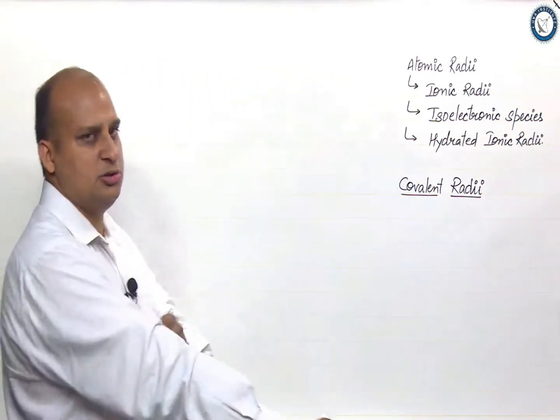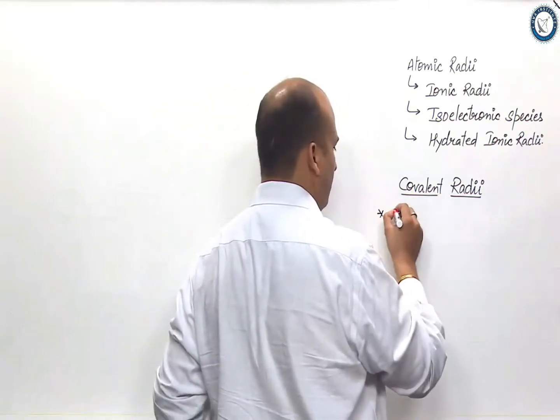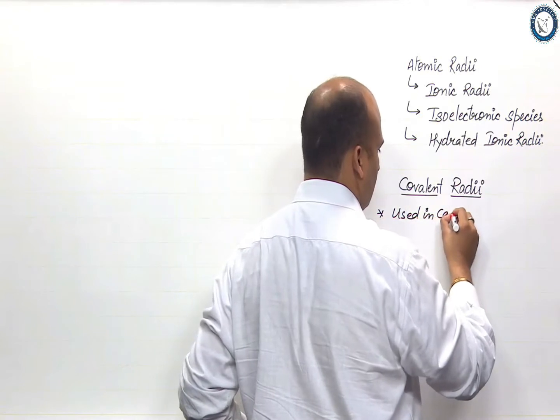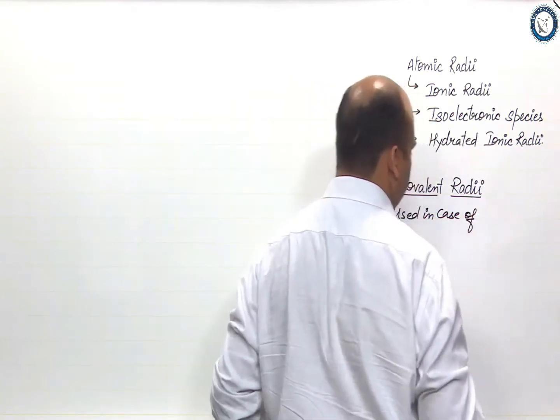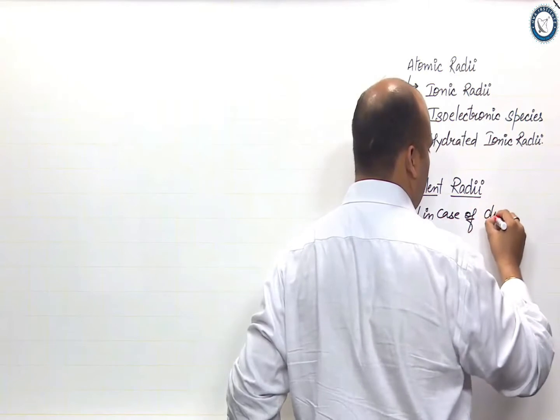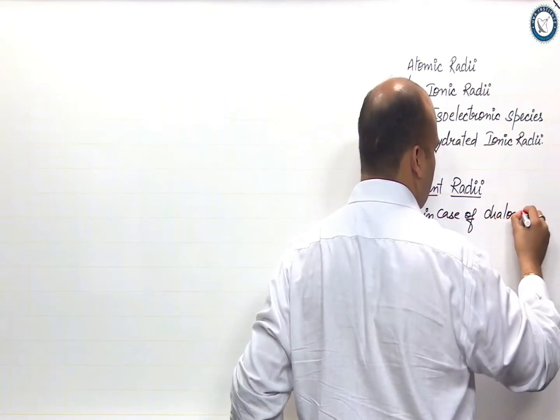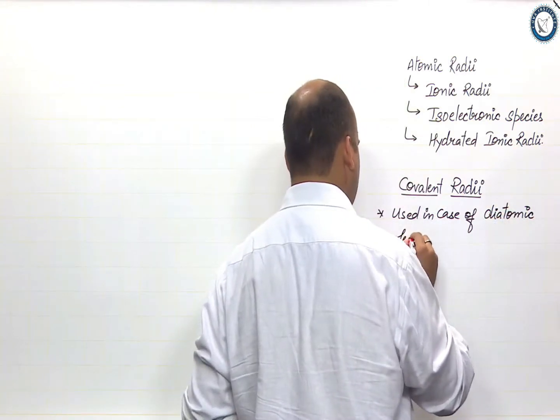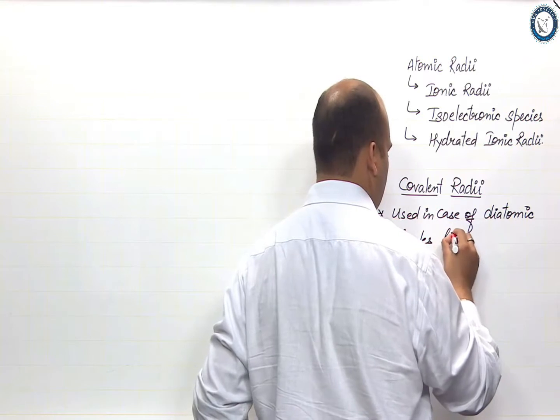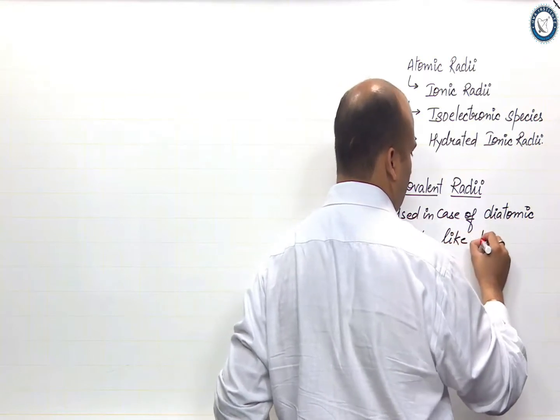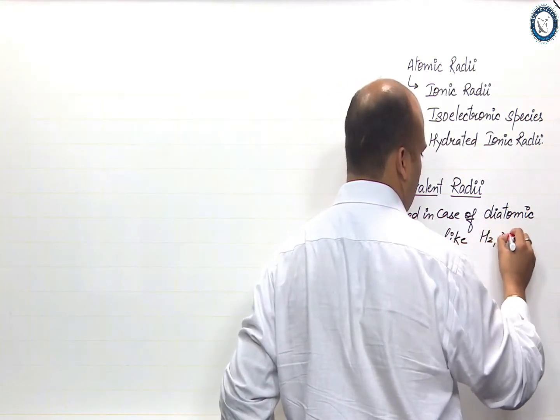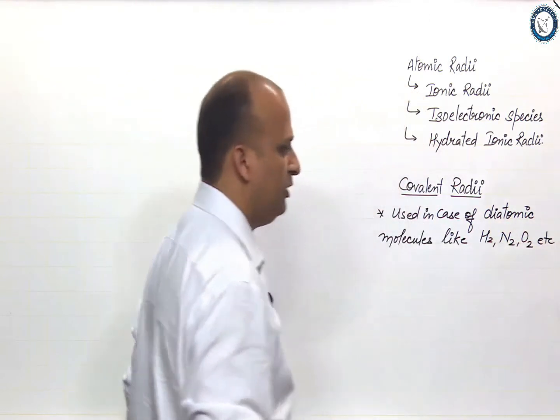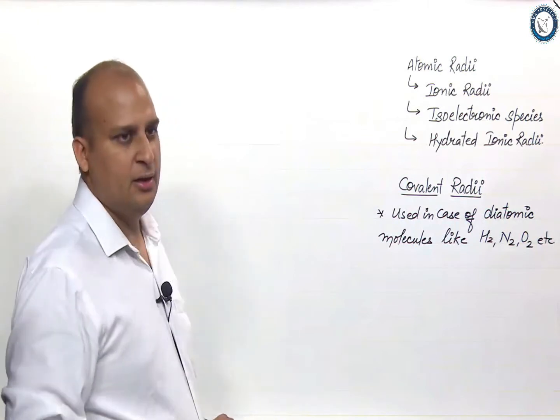Covalent radii is used in case of diatomic molecules like H2, O2, N2 etcetera. It is fine.